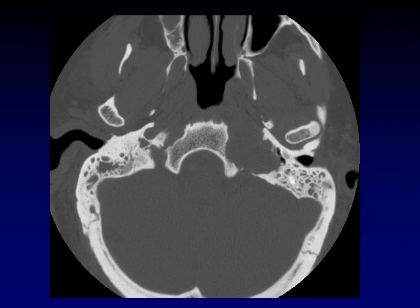If you see smooth remodeling around the jugular bulb with a preserved cortical rim pressed inward — that smooth look — that is what a schwannoma of the jugular bulb looks like. Very benign appearance, very smooth remodeling for schwannoma.